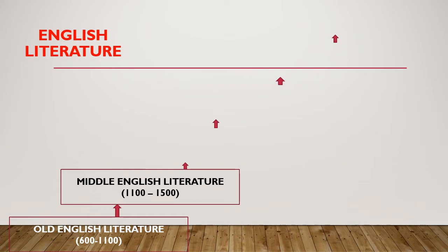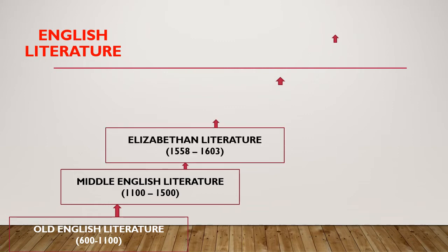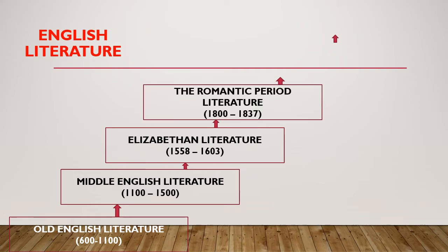Next is the Elizabethan period — the golden age of English literature and drama. William Shakespeare, also known as the Bard of Avon, wrote his plays and sonnets during this period. Among his creations are Hamlet, King Lear, Macbeth, Othello, The Merchant of Venice, and his 154 sonnets.